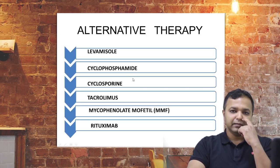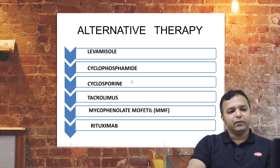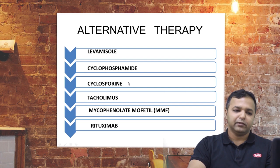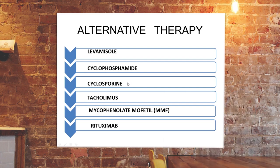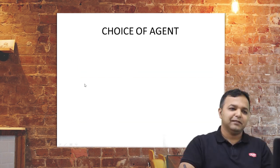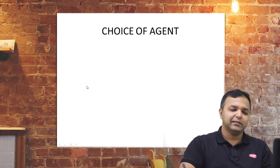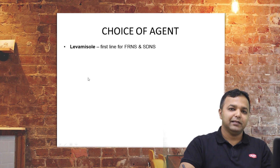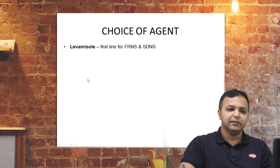Alternative therapies available include levamisole, cyclophosphamide, cyclosporine, tacrolimus, mycophenolate mofetil (MMF), and rituximab. Levamisole is an antihelminthic drug with immunosuppressive properties, widely used in the Asian subcontinent for alternative immunosuppression in frequent relapse and steroid-dependent nephrotic syndrome.